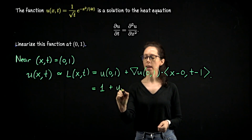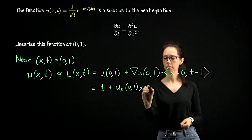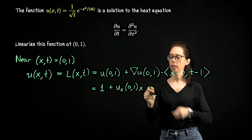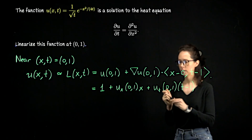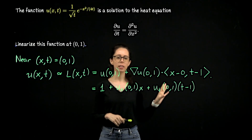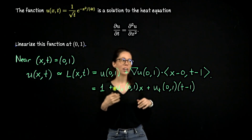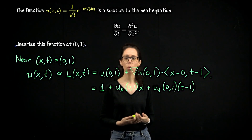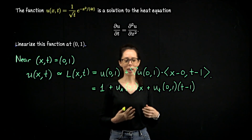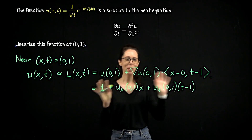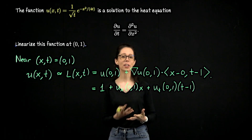So for now, this will be the x partial derivative of u evaluated at (0, 1) times x, plus the t partial derivative at (0, 1) times (t minus 1). Think about whether it would be more pleasant to differentiate this function with respect to x or with respect to t, because one of them is better. And if one is unpleasant, is there another way to get there? Let's identify which partial derivative is nicer and take that one.